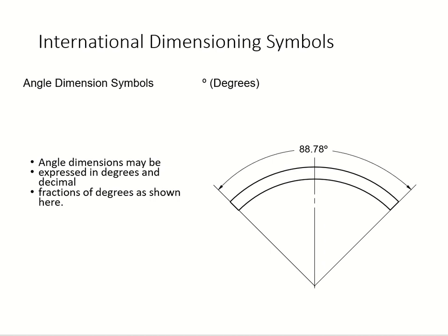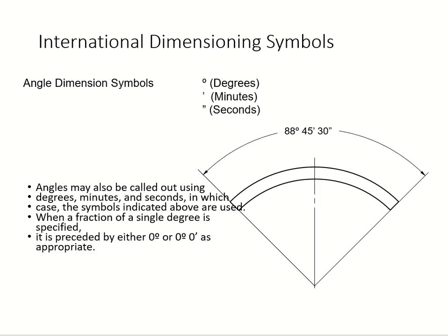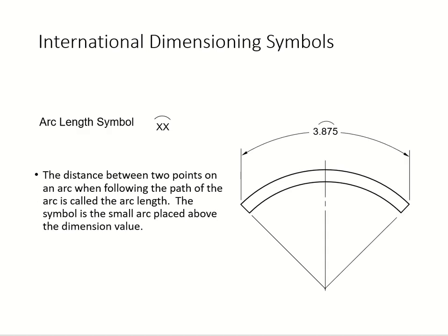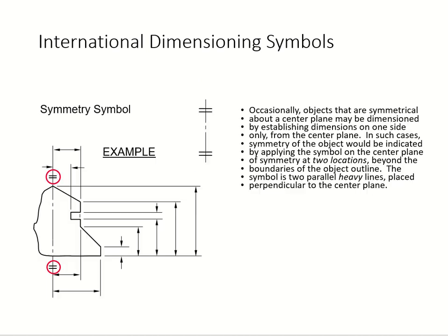Then we get into angle dimensions — we use the degree symbol, for example 88.78 degrees for an angle. Then we have angle minutes and seconds symbols. We also have the arc length symbol — XX — where the value represents the length of that arc from one point to another.